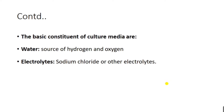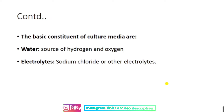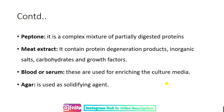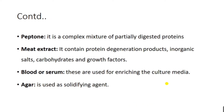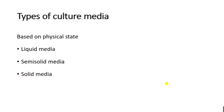The basic constituents of a culture media to grow bacteria are: water as a source of hydrogen and oxygen; electrolytes as a source of sodium chloride and other electrolytes; peptone, which is a complex mixture of partially digested proteins; and meat extract, which contains degradation protein products, inorganic salts, carbohydrates, and growth factors. Blood or serum is added to enrich the culture media, and agar is used as a solidifying agent.